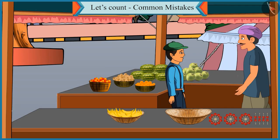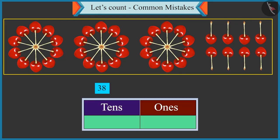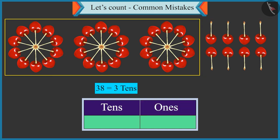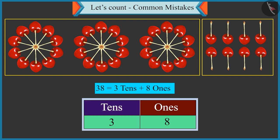Now think carefully and tell me, how will you write 38 in the boxes of tens and ones? Oh yes, 3 tens means 3 will come in the box of tens, and there are 8 single cherries, so 8 will come in the box of ones.